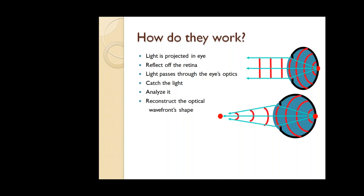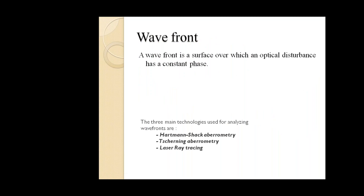The aberrometer works by projecting a light beam onto the cornea, which reflects off the retina. The light passes through the whole eye optics, is captured, analyzed, and the optical wavefront shape is reconstructed. The CCD sensor incorporated in the aberrometer analyzes each and every spot of the aberration and produces a report. The spherical plane wavefronts and spherical wavefronts are shown hitting the retina and returning to reconstruct the optical wavefront shape, with each spot recorded by the sensor.